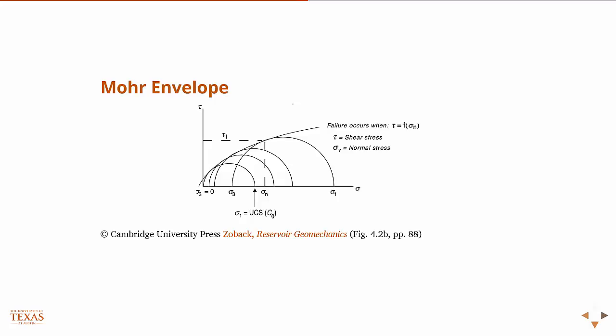When we build up this series of envelopes, if we connect them with a line, we create a failure envelope. If the state of stress is outside this line, above this line in any way, then we create failure. The point where these circles are tangent to that line, this angle for every circle is 2 beta.